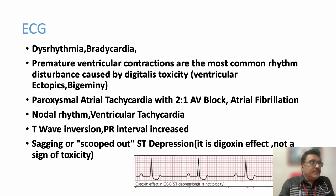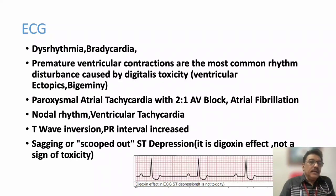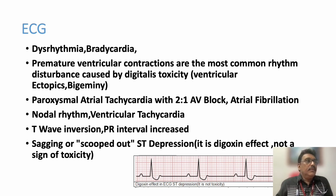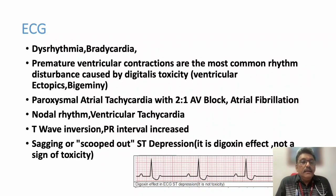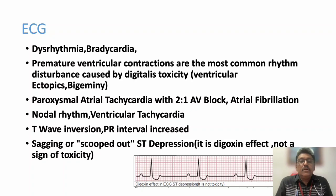The problem with Digoxin is its very narrow therapeutic index — below it the action is insufficient; above it the patient can have arrhythmias and other abnormalities. On ECG you may see any type of dysarrhythmia: bradycardias, premature ventricular complexes, bigeminy, paroxysmal atrial tachycardia with cardiac block, atrial fibrillation with controlled heart rate and regular QRS complexes, nodal rhythm, ventricular tachycardia, T-wave inversion, and PR interval increase.